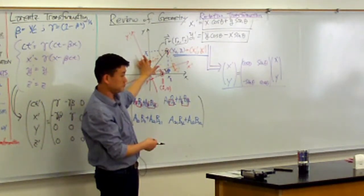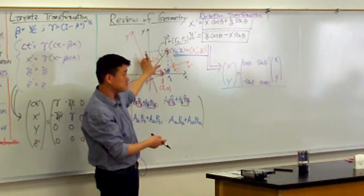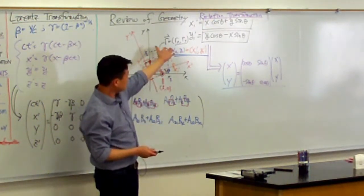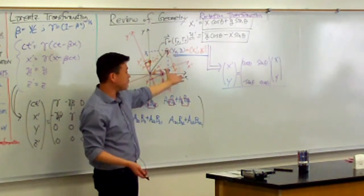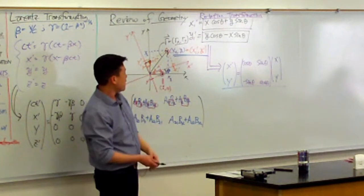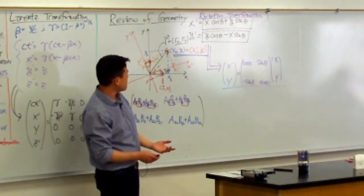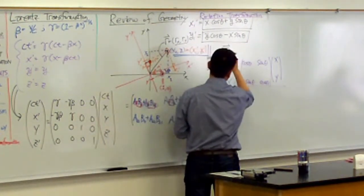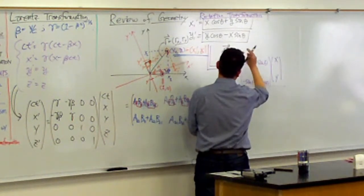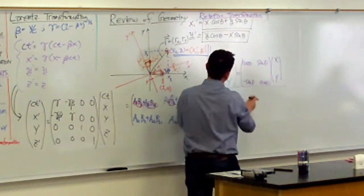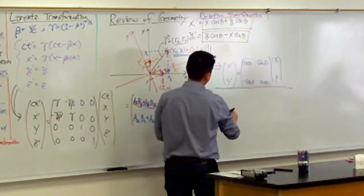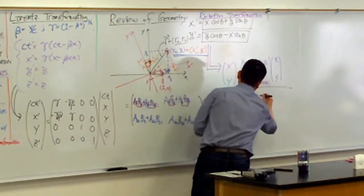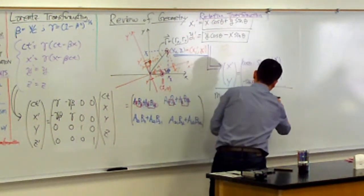What property of this vector does not change as you change the coordinate axis? The magnitude. That's what you know as a rotational invariant — it's a quantity that doesn't change. The magnitude of r doesn't change under rotation.